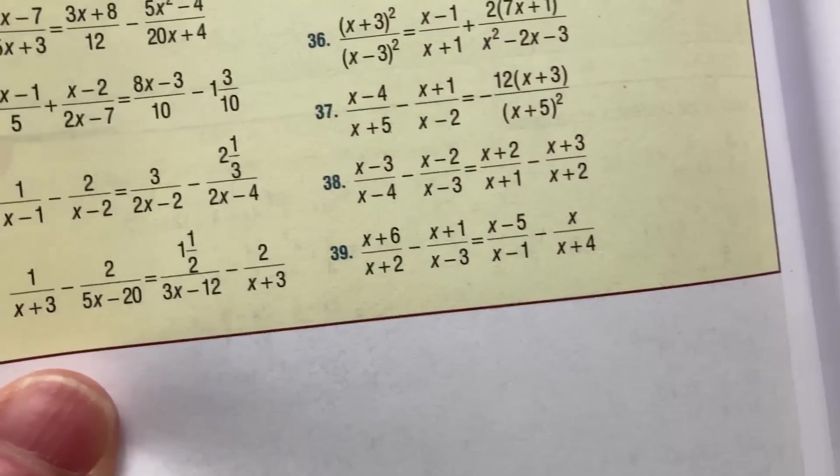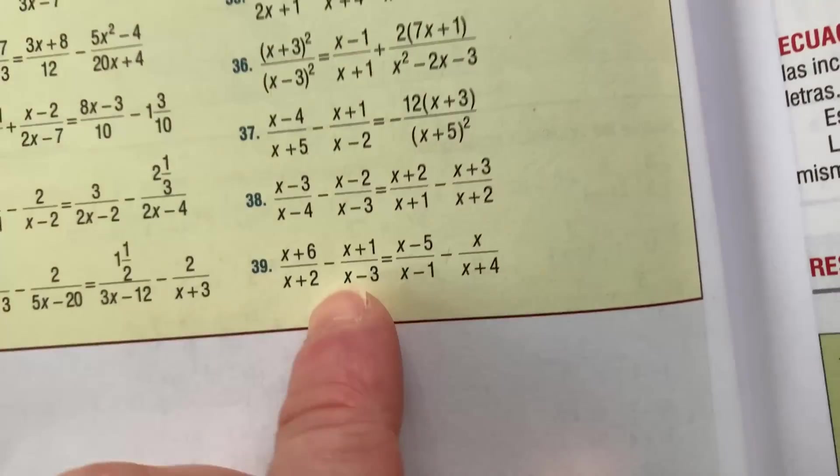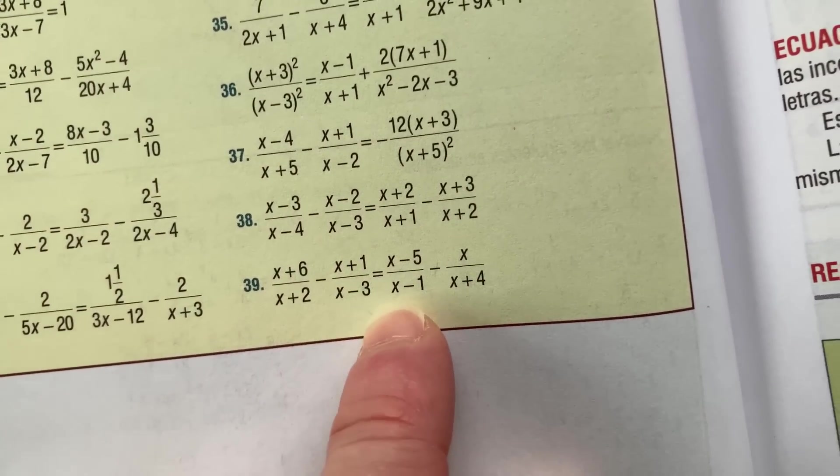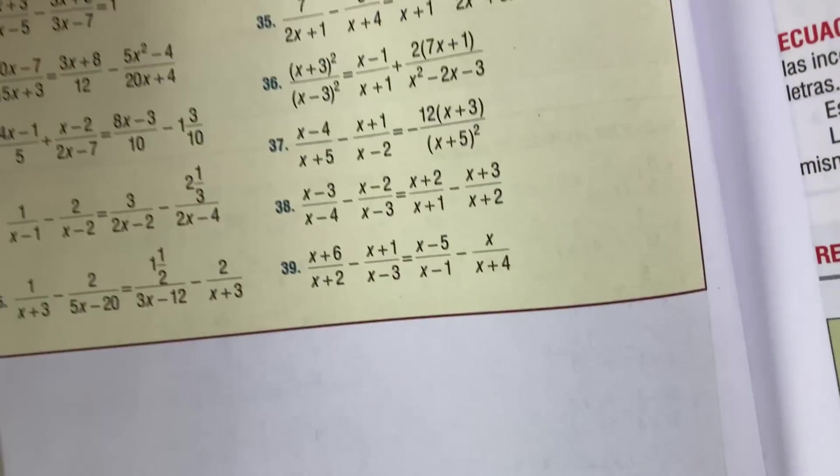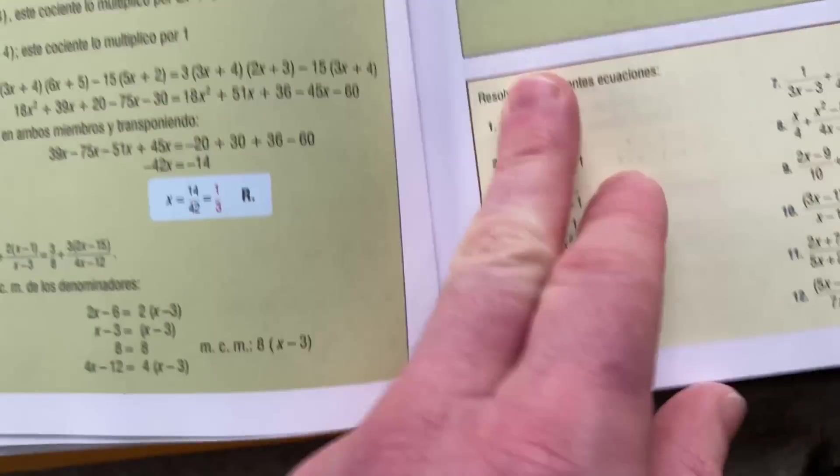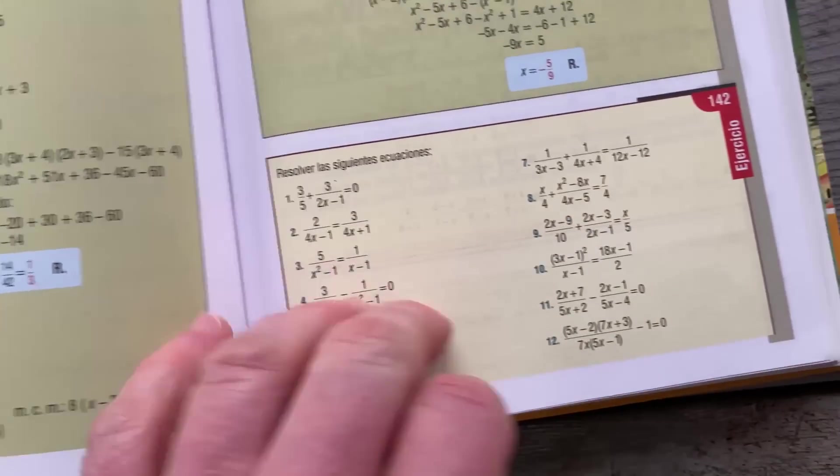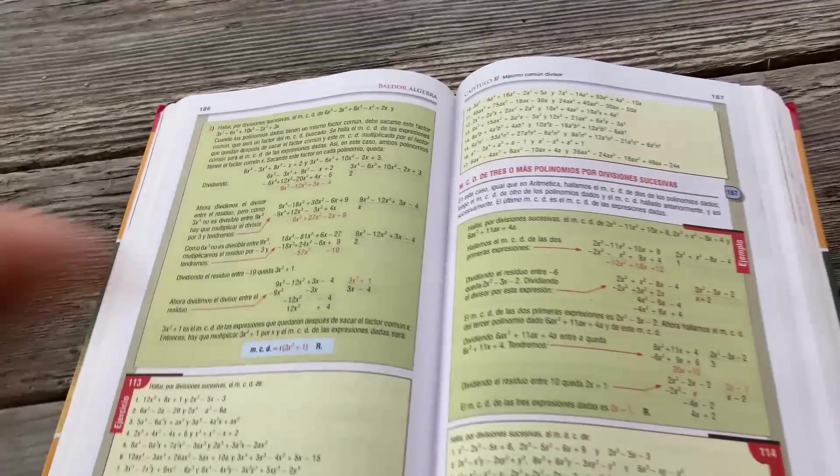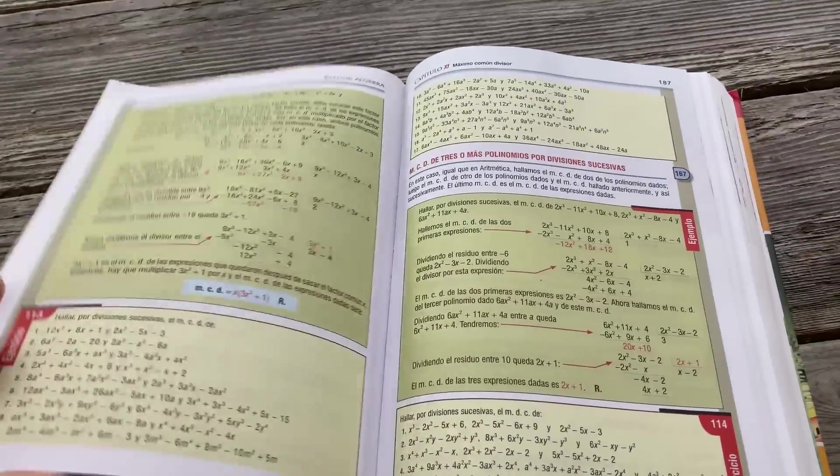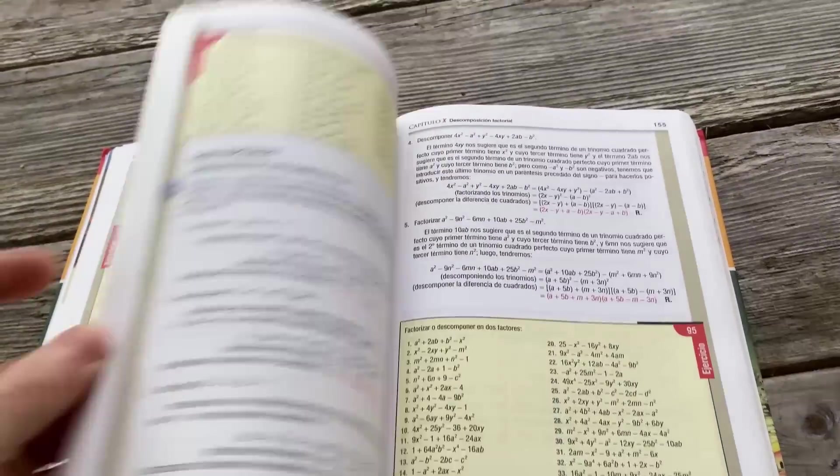These problems are pretty nuts. Look at this. We have an equation here: (x + 6)/(x + 2) - (x + 1)/(x - 3) = (x - 5)/(x - 1) - x/(x + 4). Wow, I guess we just have to solve. Look at all of these exercises, just nuts. Let's talk about the worst thing about this book.